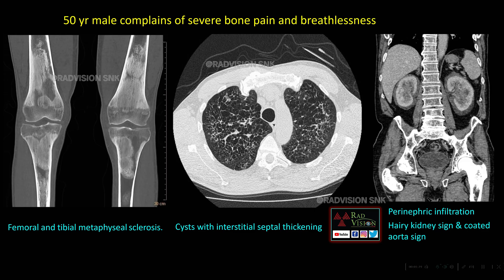Next — 50-year male with complaints of severe bone pain and breathlessness. Here you can see there is femoral and tibial metaphyseal sclerosis. Here you can see there are multiple cysts noted in the upper lobes along with interstitial septal thickening. Also, there is soft tissue infiltration noted in the perinephric spaces symmetrically — the classical hairy kidney sign. Similar soft tissue can also be seen along the aorta, which is called the coated aorta sign.